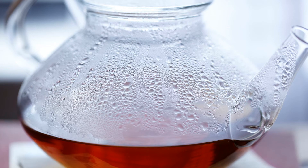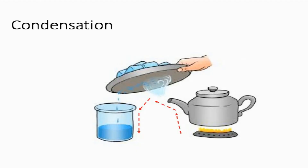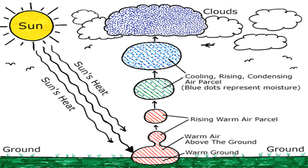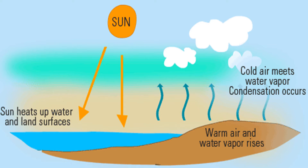Life depends on the water cycle, which includes condensation, evaporation, and precipitation. Without condensation, there would be no clouds, rain, snow, or hail. Cloud formation is a large-scale example of condensation and generally forms when water vapor in the air rises to meet cold air higher in the atmosphere. As the warm air cools and the molecules stick together, drops of water or ice crystals form and surround dust particles in the air. Clouds are billions of these water-coated dust particles swirling together.